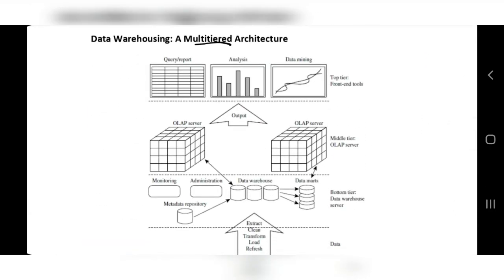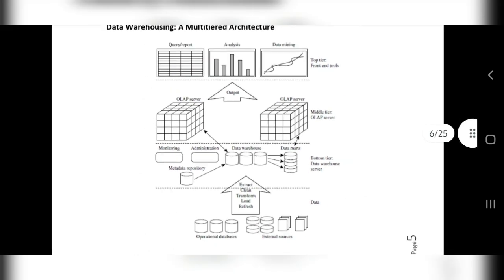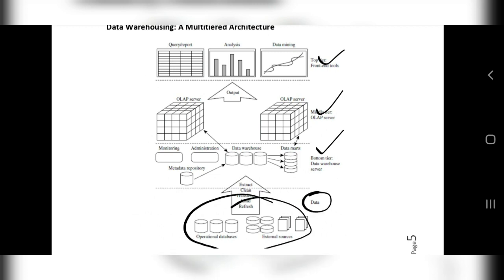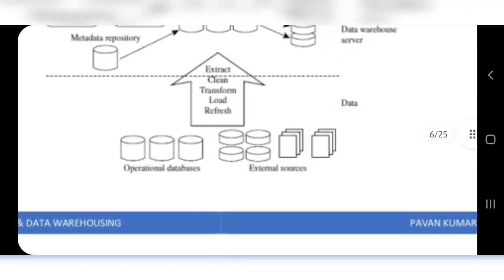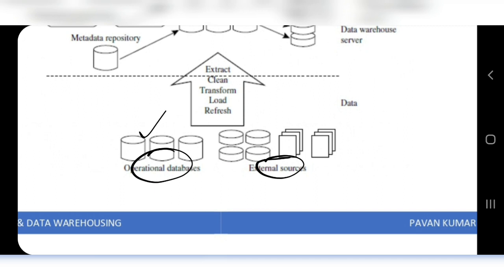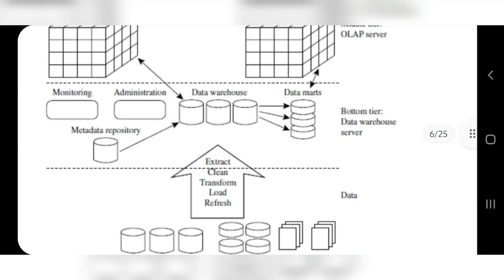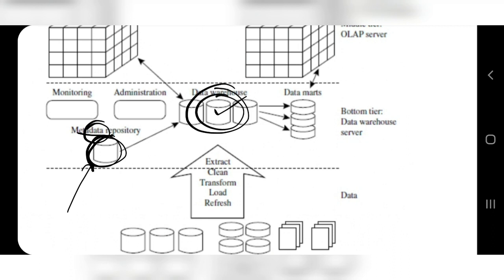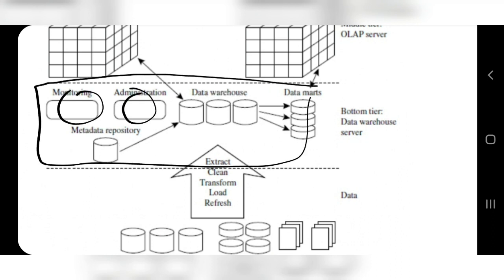The second important topic is the multi-tier architecture, also known as three-tier architecture — you need to know this diagram thoroughly. There are three main layers. The bottom tier starts with existing databases and external sources, which go through extraction, cleaning, transformation, loading, and refreshing. The result is a refined data set stored in the data warehouse, along with a metadata repository. Data mart is the smaller version of the data warehouse.